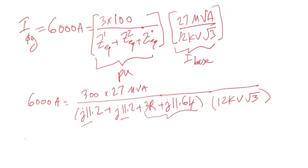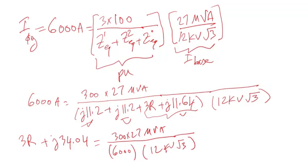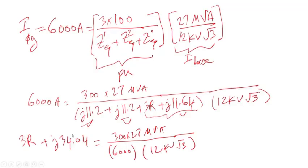I can rearrange to solve for R. Combining the imaginary parts — j11.2 plus j11.2 plus j11.64 — gives j34.04%. I then bring 6,000 amps across and take the magnitude of both sides. If you have an impedance Z = R + jX, you can write it in polar form where the magnitude is the square root of R squared plus X squared. Applying the same here gives the square root of (3R)² plus 34.04².